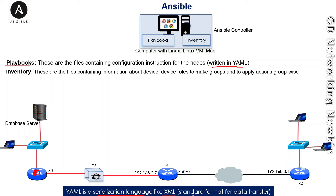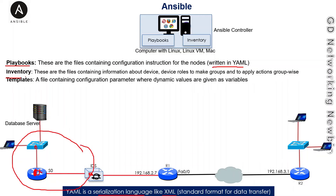Ansible also uses inventory files, which contain information about devices, their roles, and groups. For example, you can list devices by name and assign them to groups. Templates hold common configuration for a group of devices, and variables store device-specific configuration values.